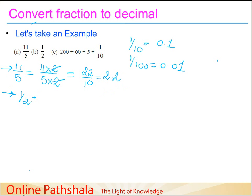Let's take another example: one-half. To convert to a denominator of ten, I multiply two by five. Since I multiply the denominator by five, I also multiply the numerator by five. This gives me five-tenths, which I can easily convert to 0.5.